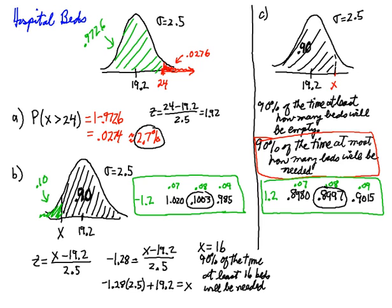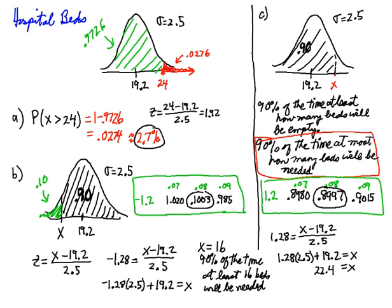In the Z-score formula, I have row 1.2 and column 0.08, giving a positive Z of 1.28. So 1.28 equals X minus 19.2 divided by 2.5. Solving for X: 1.28 times 2.5, then add 19.2, and X turns out to be 22.4. So 90% of the time, at most 22.4 beds will be needed.